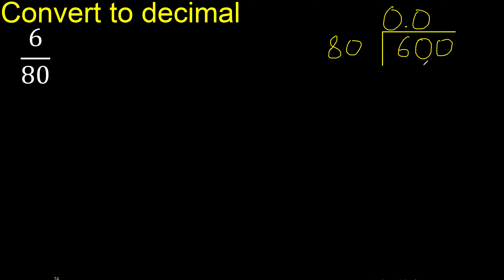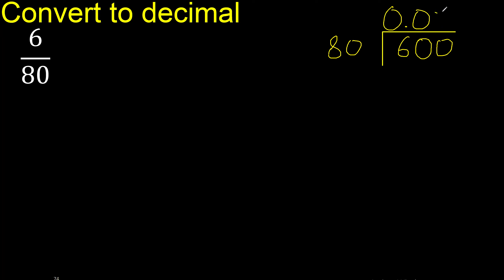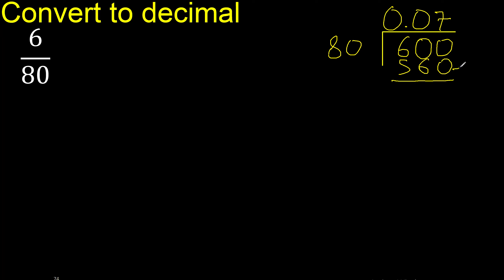600 is not less than 80, therefore 80 multiplied by which number is nearest to 600 but not greater. Multiplied by 8 is excessive; multiplied by 7 is 560 — ok, is not greater.